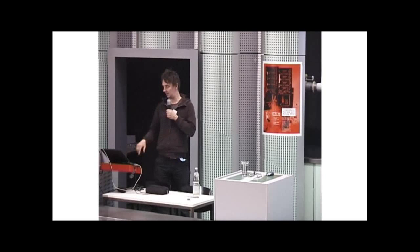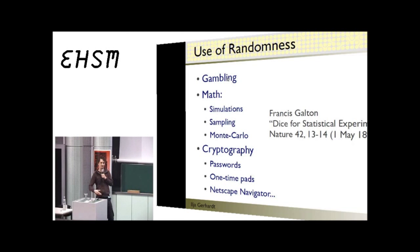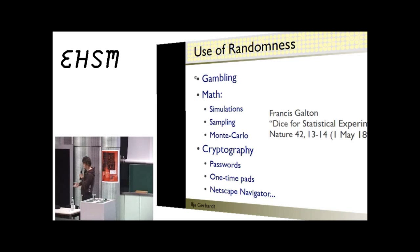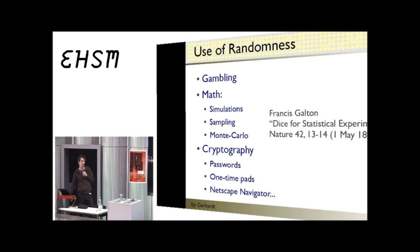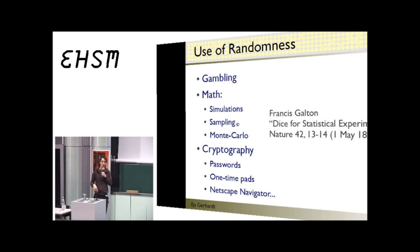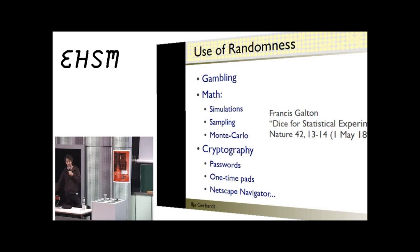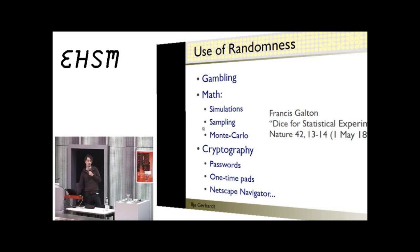Random numbers are used in many ways. The first is gambling — do you bet that a dice throw gives more or less than seven? More importantly, in math they are critical for simulations and for sampling, such as randomly selecting people for a survey by calling a random telephone number. There's also a big class of so-called Monte Carlo methods where you use properties of random numbers to sample a certain space.